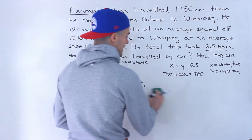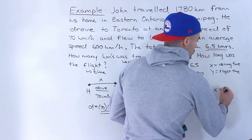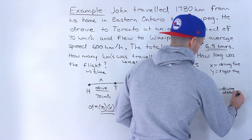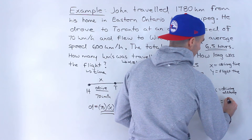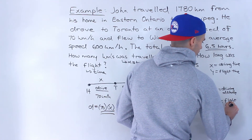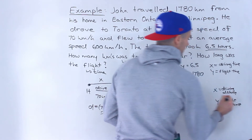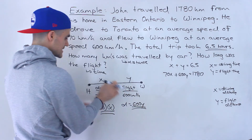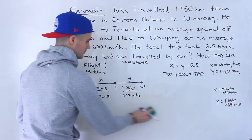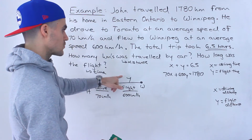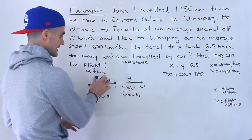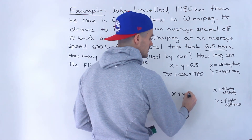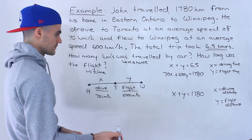Another way to set this up is to let x equal the driving distance and y equal the flight distance, so x and y are distances instead of times. If x is the driving distance in kilometers and y is the flight distance in kilometers, then we know the total distance is 1,780, so x plus y equals 1,780 kilometers.